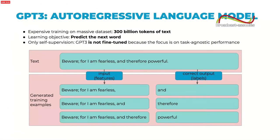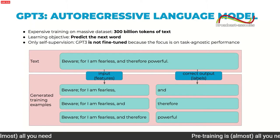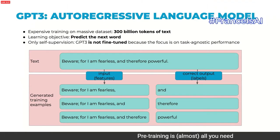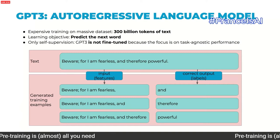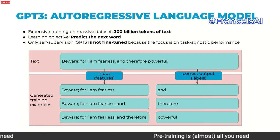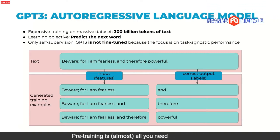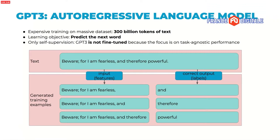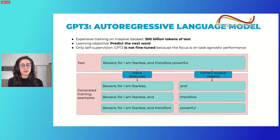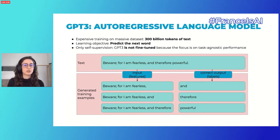Now let's talk about GPT-3. It was introduced in May 2020, and it's an autoregressive language model — as opposed to BERT, which was a masked language model — which means it predicts future values based on past values. From raw text, we can generate multiple training examples where the task is at every step to predict the next word. The idea behind GPT-3 is to make the whole training self-supervised. It was trained on massive amounts of data and is not fine-tuned, because the focus is on task-agnostic performance — though in principle it could be fine-tuned.